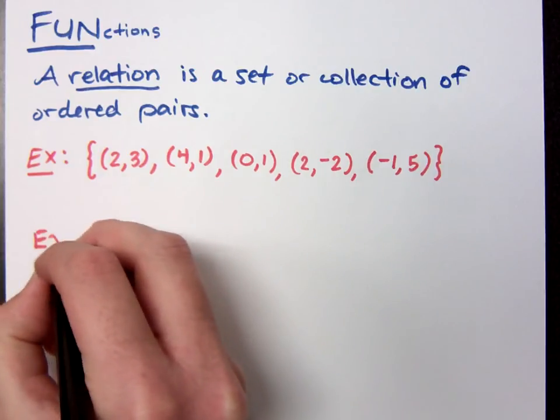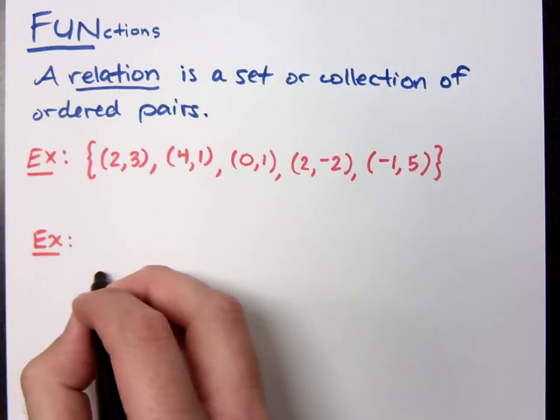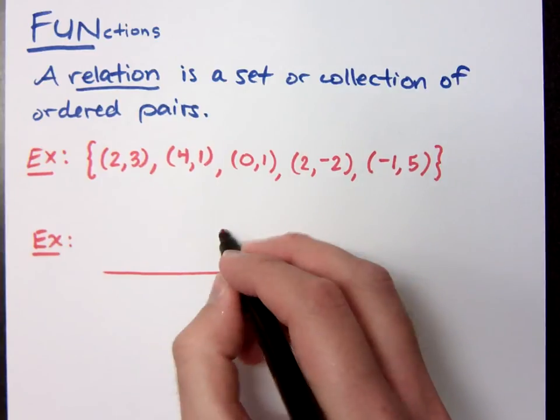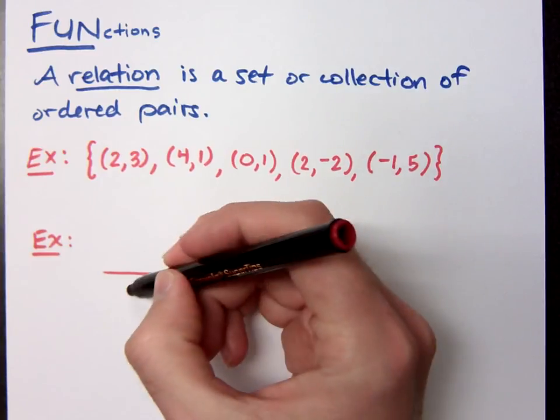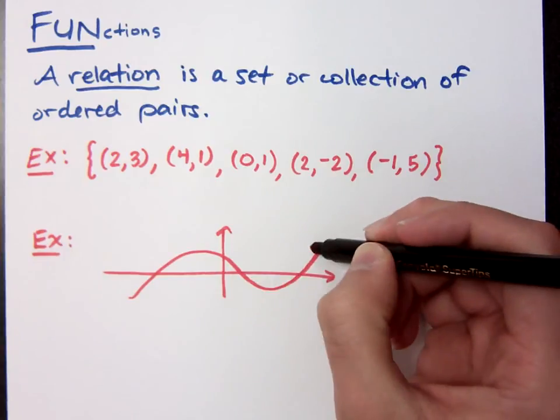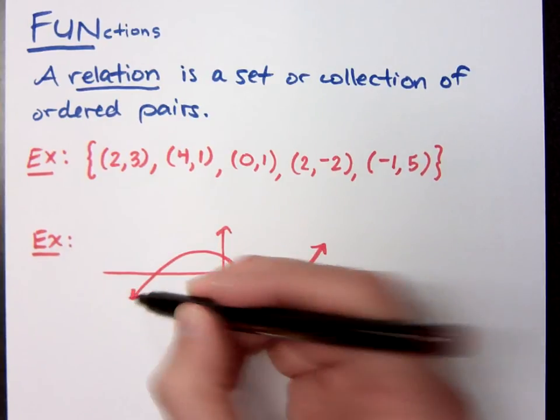Now, sometimes when we put a bunch of ordered pairs together, we can have a graph. Something that looks like this.